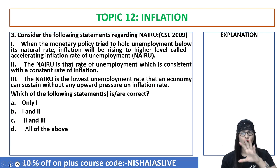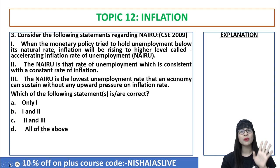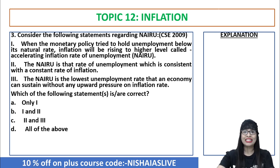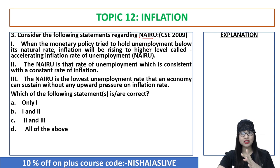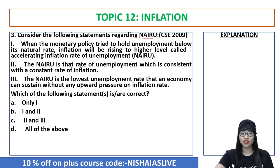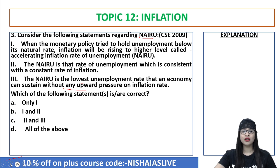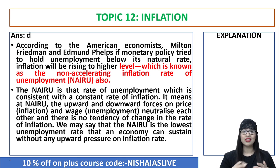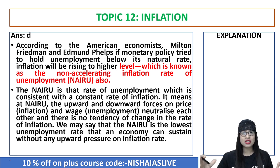In the year 2009, UPSC had a question on NAIRU — Non-Accelerating Inflation Rate of Unemployment. The question statements were: one, when monetary policy tries to hold unemployment below the natural rate, inflation will be increasing to a higher level; two, NAIRU is that rate of unemployment which is consistent with a constant rate of inflation; three, it is the lowest rate of unemployment that an economy can sustain without any upward pressure on inflation rate. The answer is option D — all of the above are absolutely correct. NAIRU is nothing but the non-accelerating inflation rate of unemployment — the rate of unemployment absolutely consistent with the constant rate of inflation.